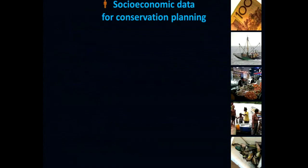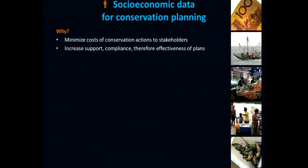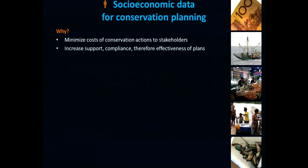Why do we need socioeconomic data for conservation planning when we're talking about species and habitats? By placing protected areas, we also want to make sure we have the least impact on people in the region or affected by conservation actions. The idea is that placing these protected areas to reduce impact on people is going to increase their support and compliance with our conservation actions, and ultimately the effectiveness of the plans we implement.